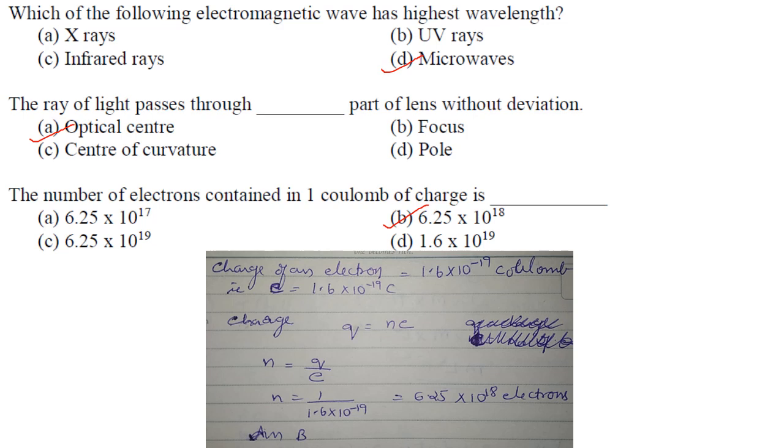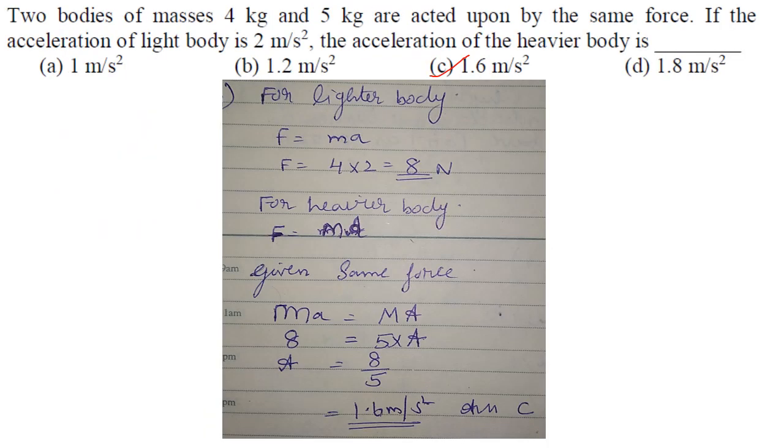Two bodies of masses 4 kg and 5 kg are acted upon by the same force. If the acceleration of light body is 2 m/s², the acceleration of the heavier body is: For lighter body F = ma = 4 × 2 = 8 N. For heavier body, F = MA, so 8 = 5 × a, thus a = 8/5 = 1.6 m/s². Answer is option C.